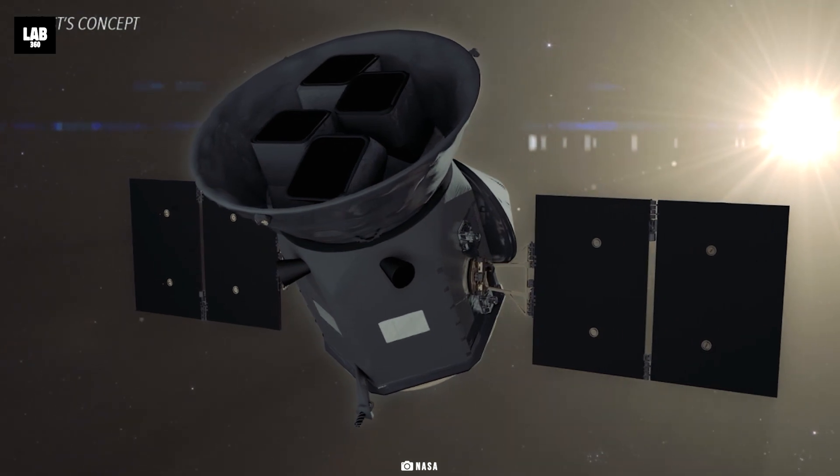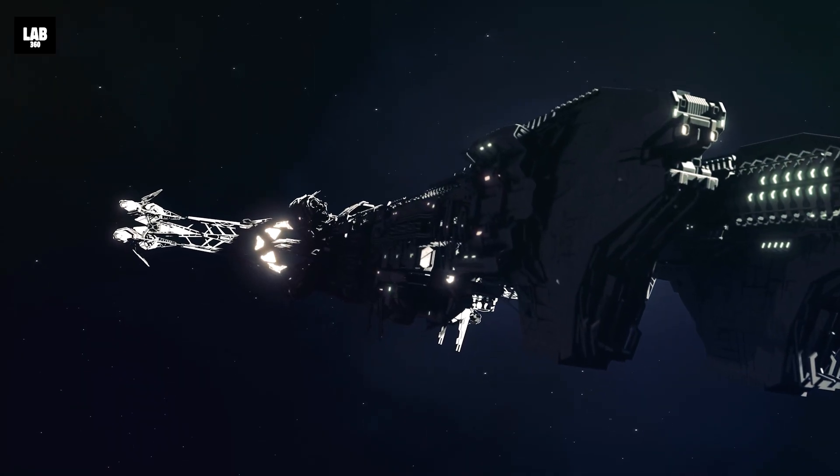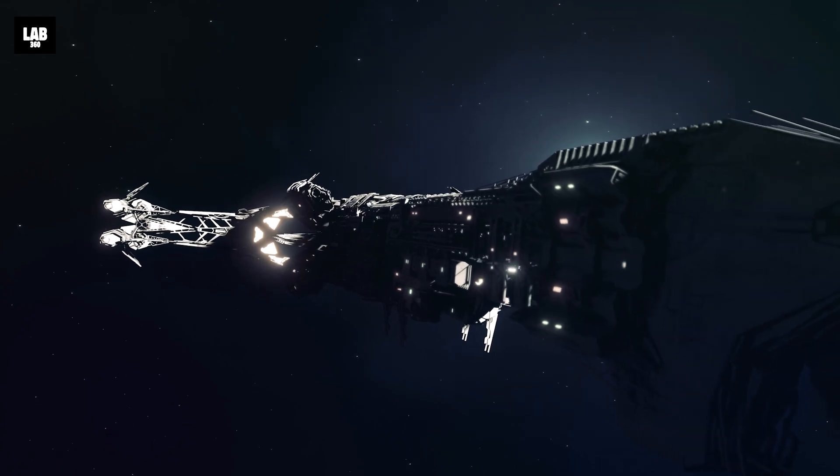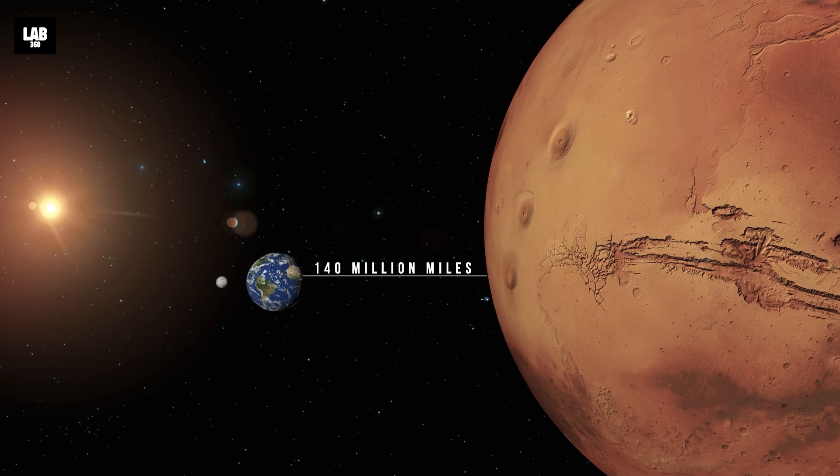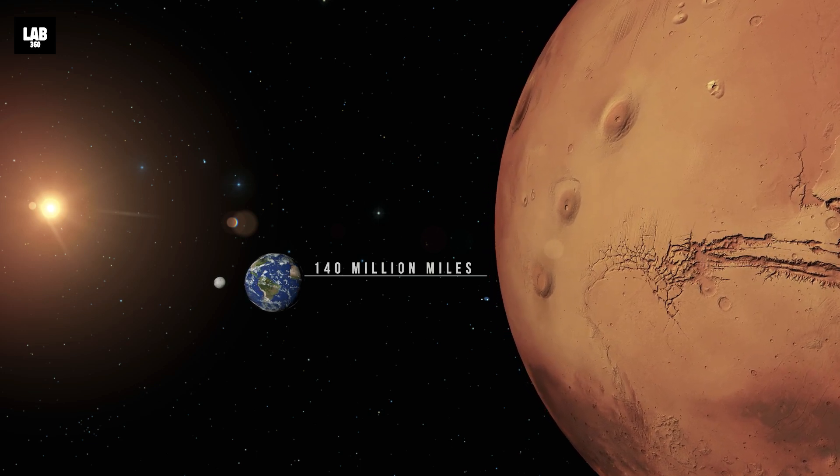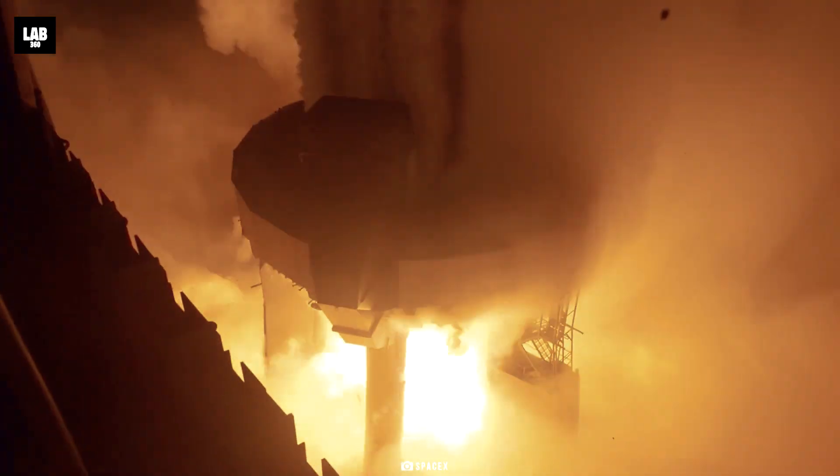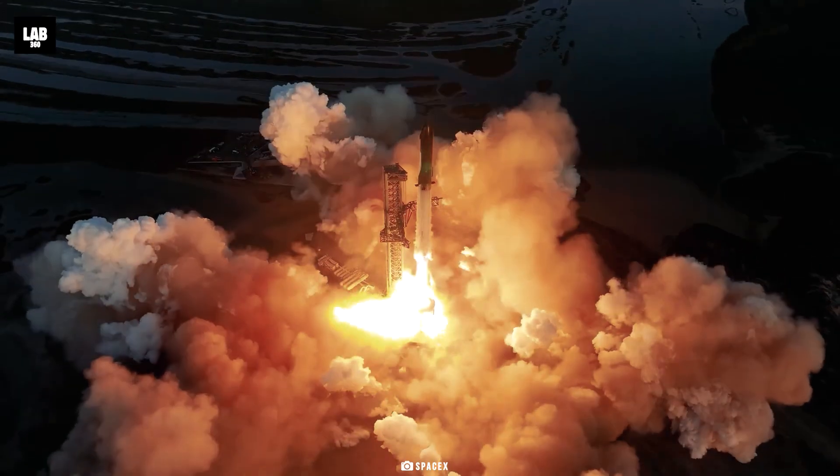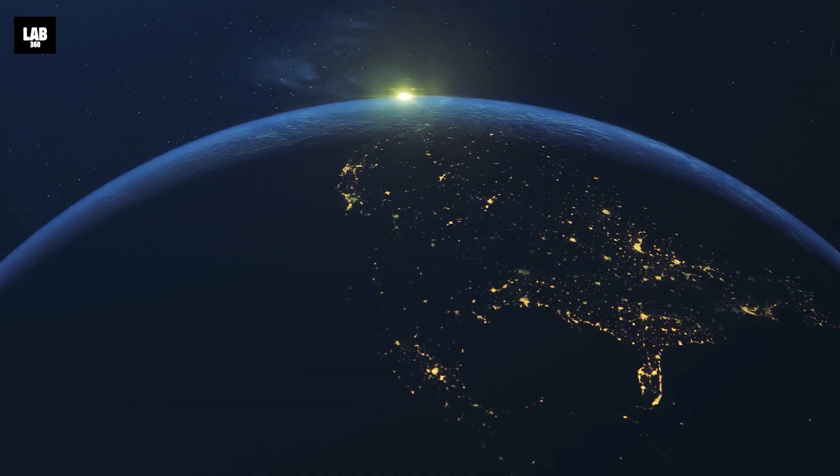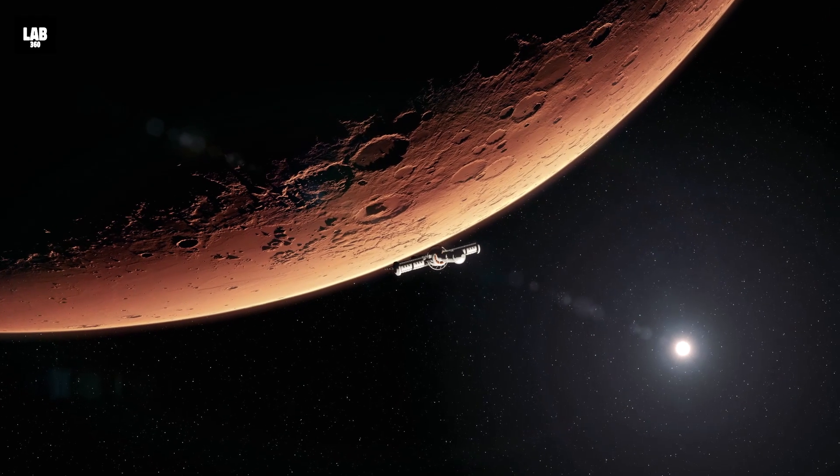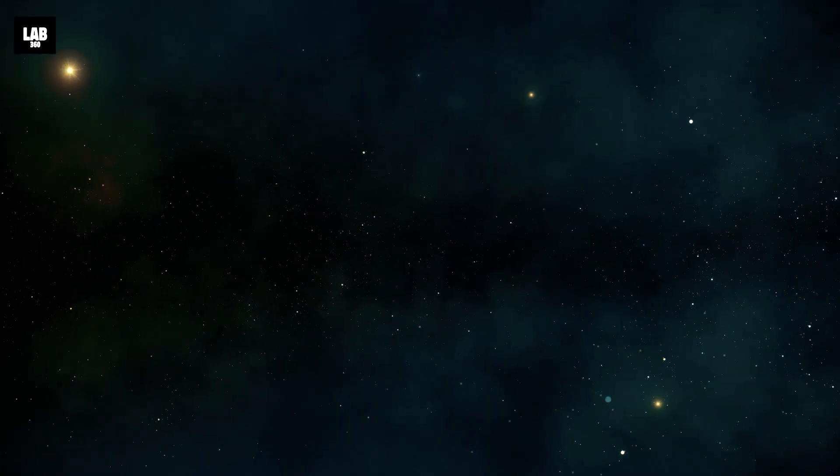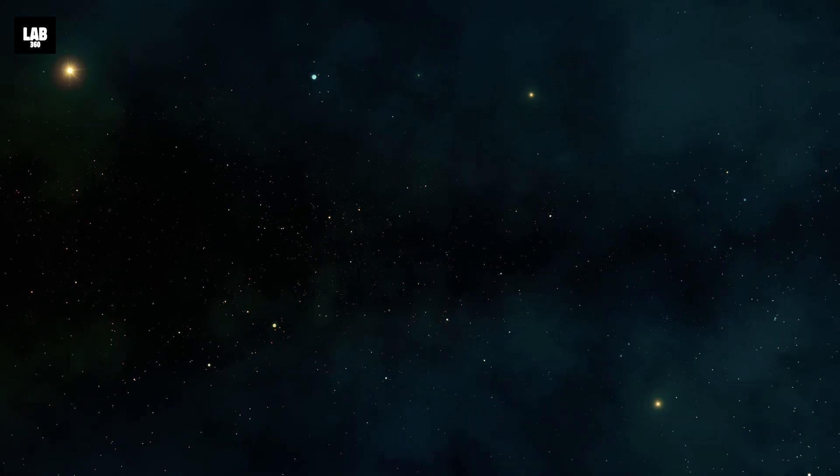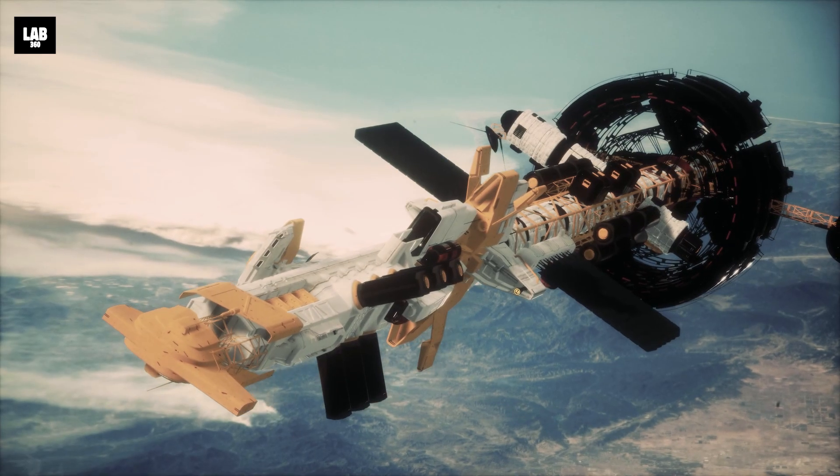Reaching these two planets physically will still require immense advancement in technology. On average, the distance between Earth and Mars is approximately 140 million miles. By current means of space transport, it would take anywhere between 5 to 10 months to reach Mars. One light year is around 6 trillion kilometers, so 137 light years would be 822 trillion miles.